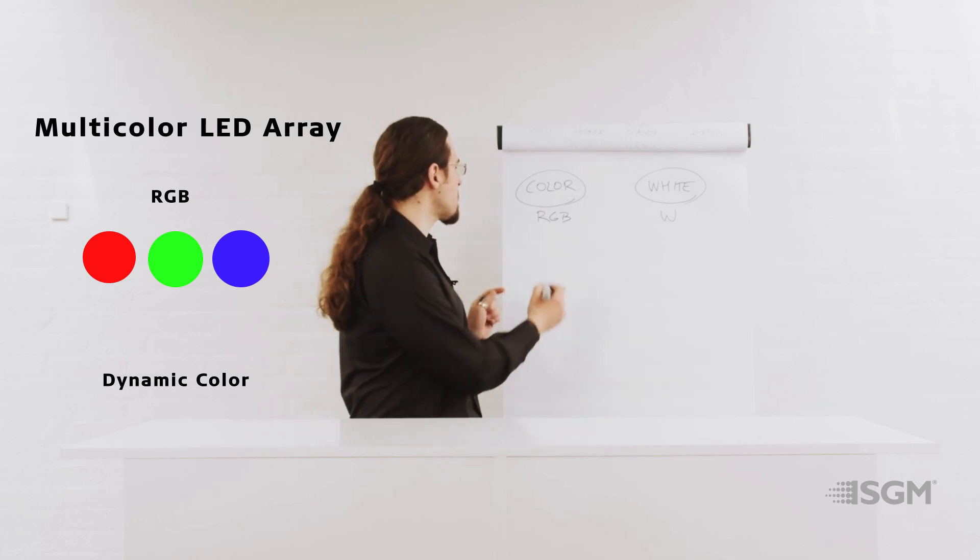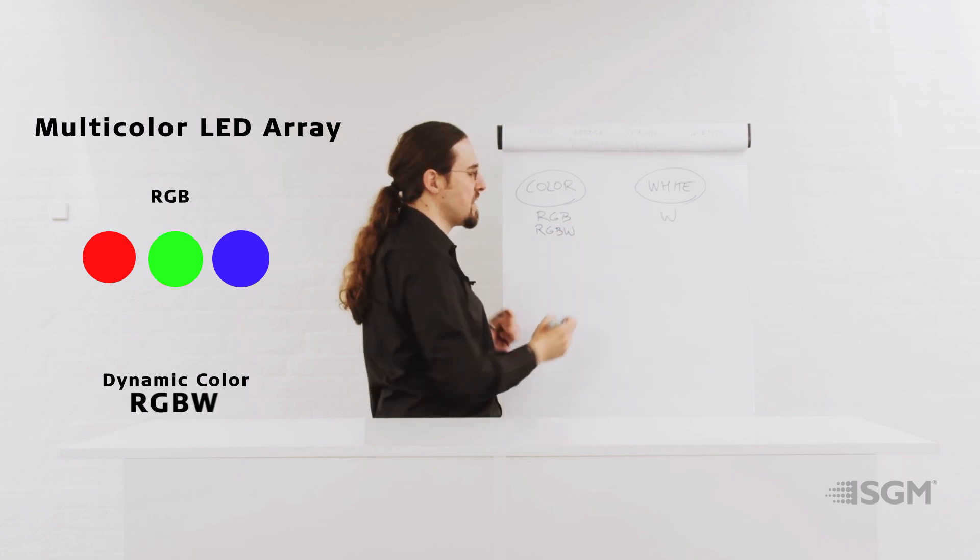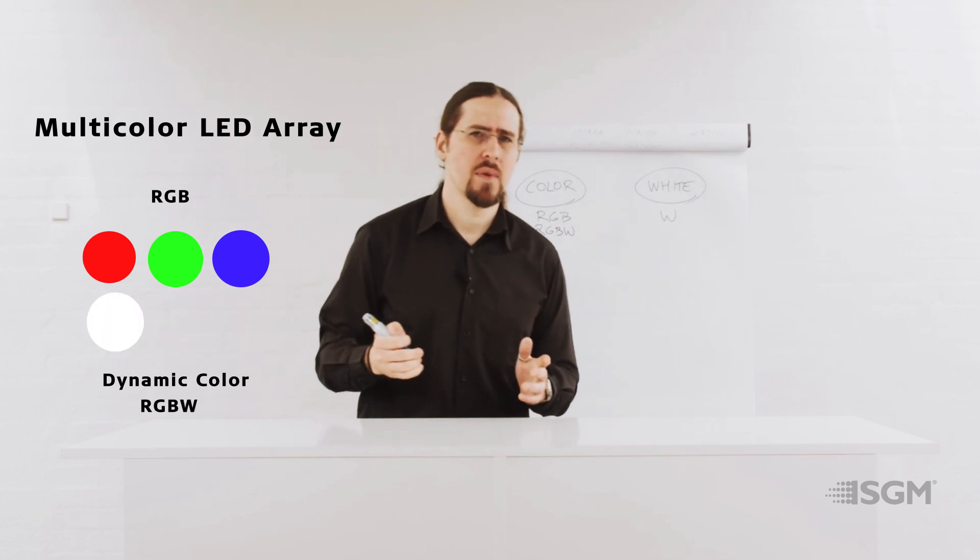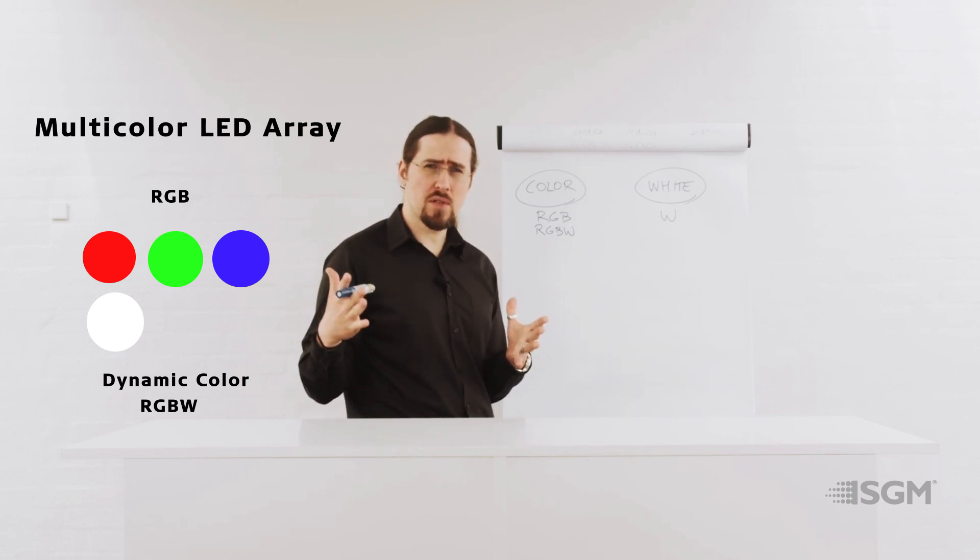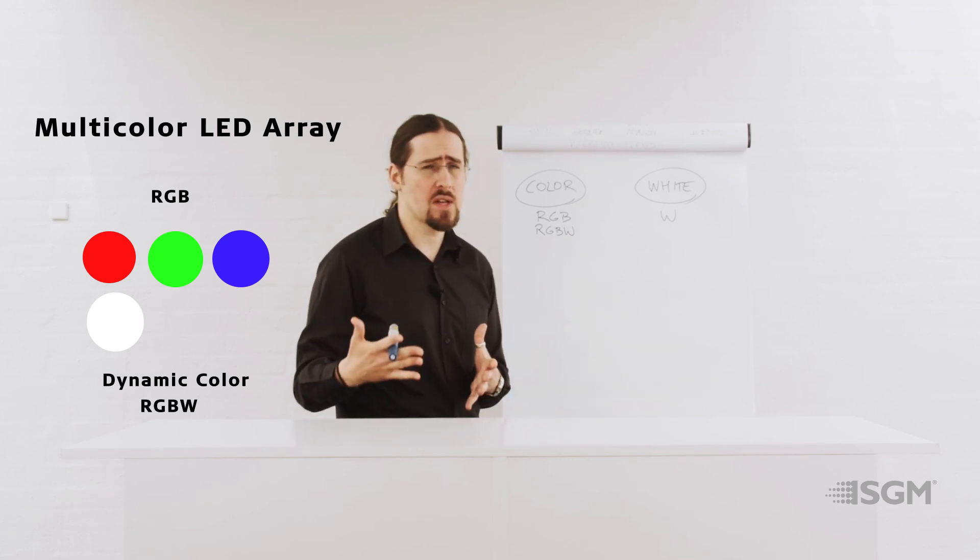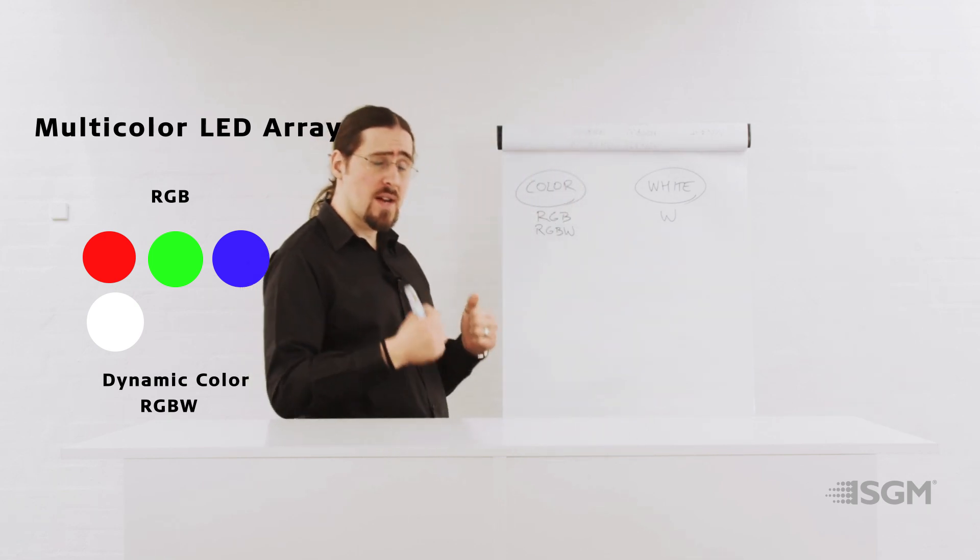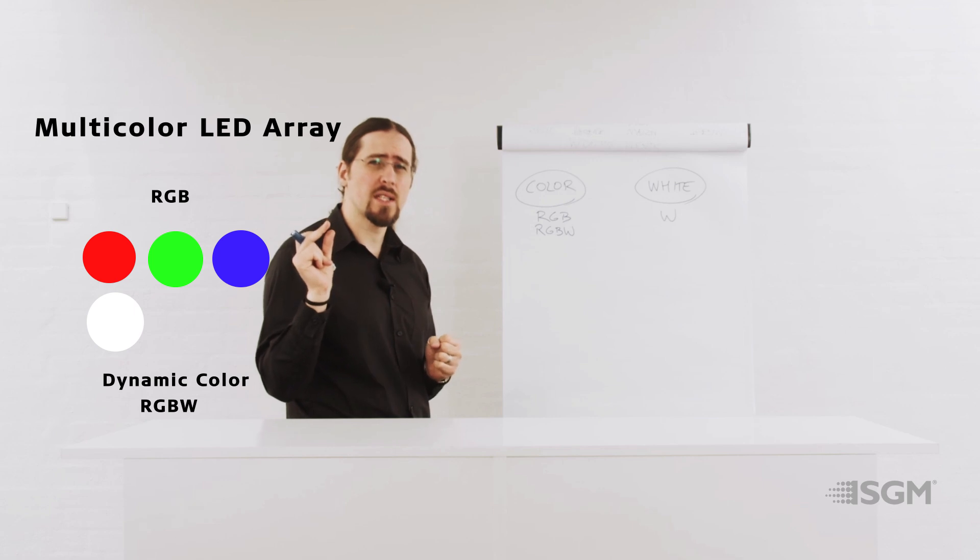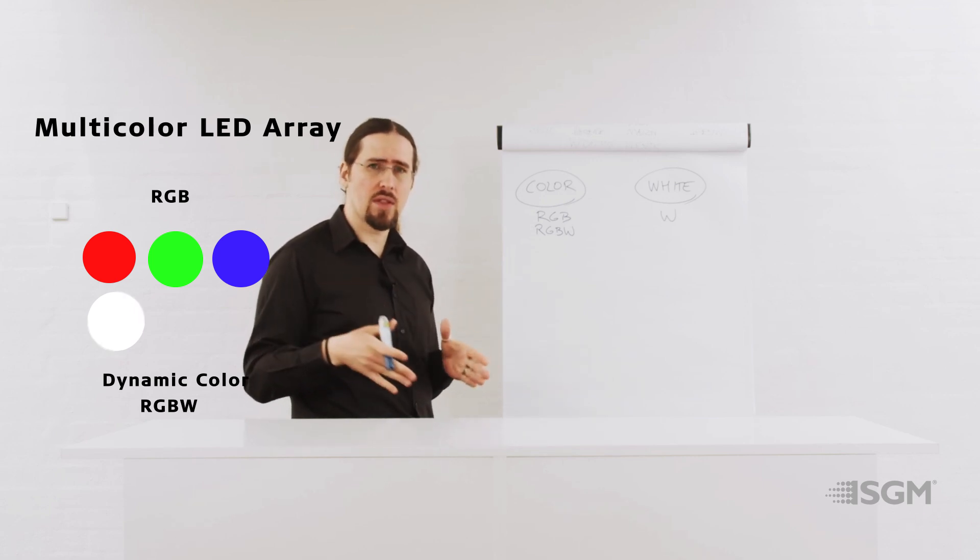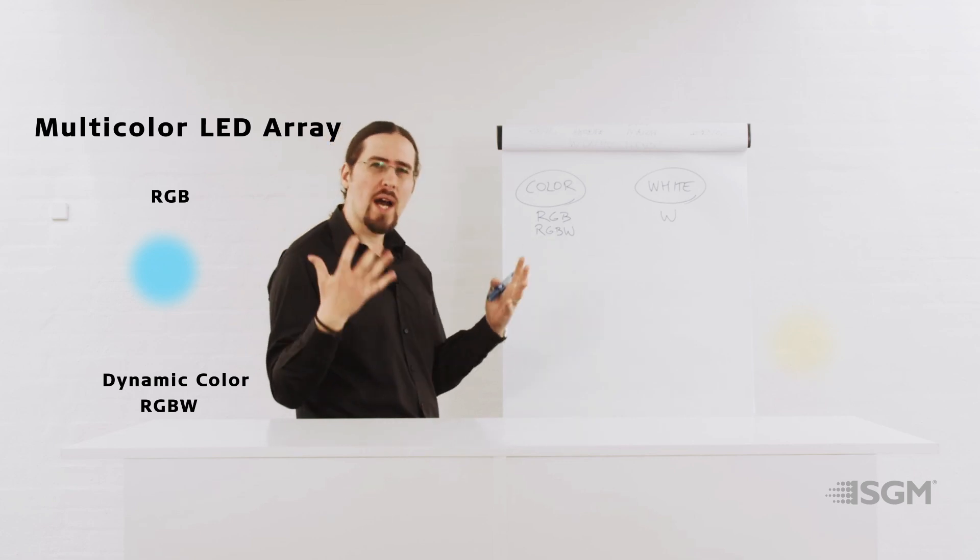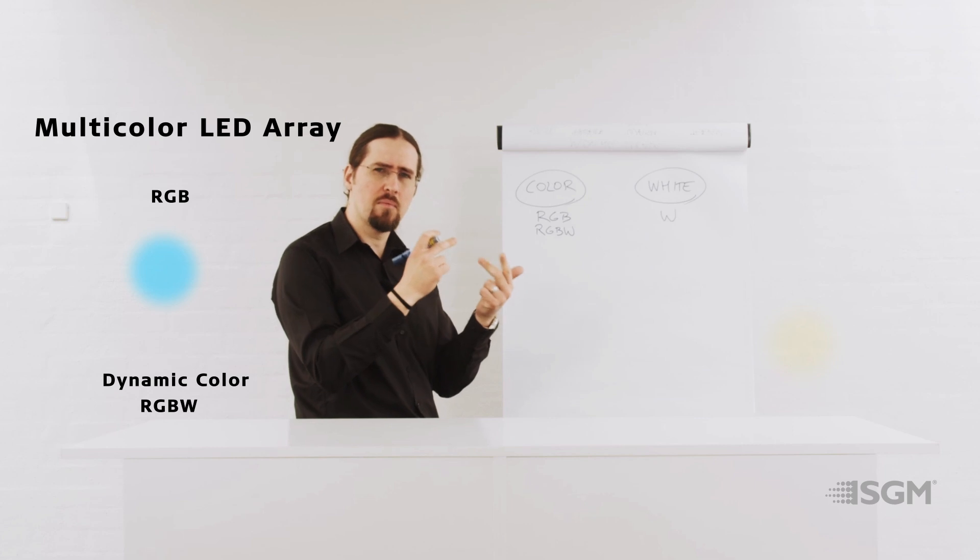But sometimes you also want to have an RGB white LED array. So you are adding a white LED, normally a cold temperature white LED, 5700K, 6500K, something that is very powerful in a pure white, not necessarily with a high color rendering, but enough to give you more white as a mix of the four LEDs, red, green, blue, and white.